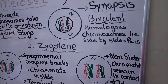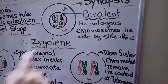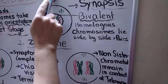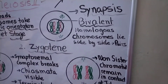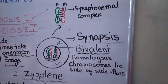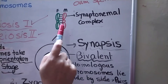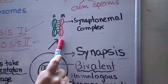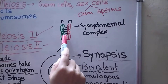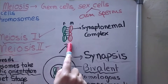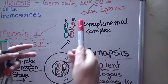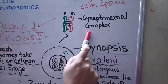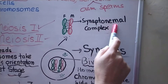The next stage is zygotene. In zygotene, one homologous chromosome comes from the father and one comes from the mother, and their pairing takes place. Their pairing occurs in a zipper fashion — bonds form between them and join them together, holding them in contact. They form a complex known as the synaptonemal complex.